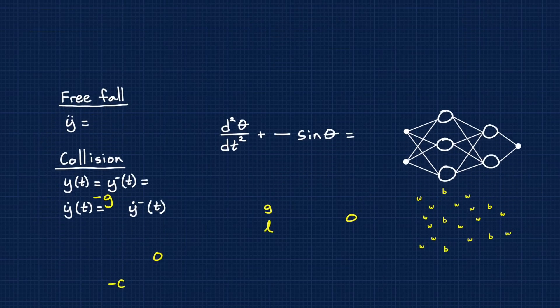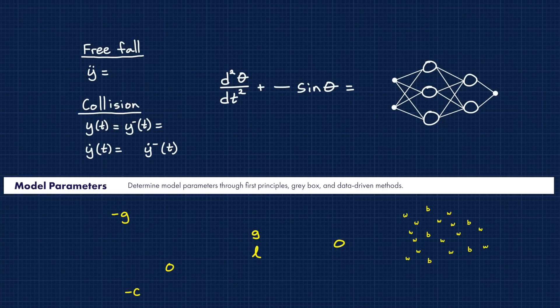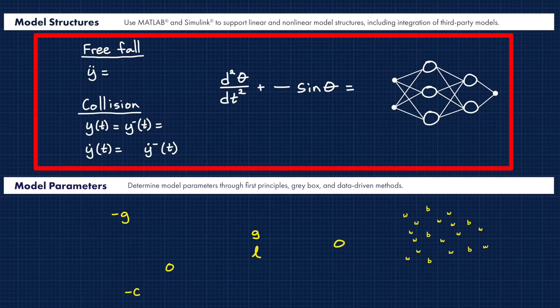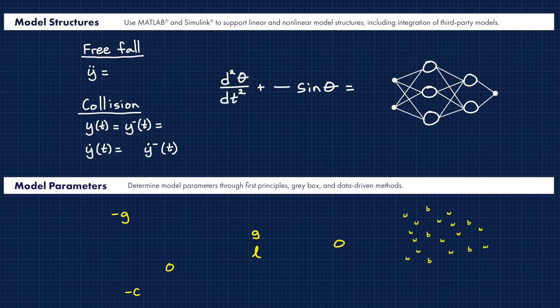In each of these cases, we can split the model up into two different parts. There are the model parameters, or the variables, which we can think of as specific numbers within the model. And then there is the structure, which is the set of equations that establish the relationship between those variables. So when we're creating a mathematical model of something, we have to think about which model structure we're going to use, and how we find the model parameters that make up that structure.